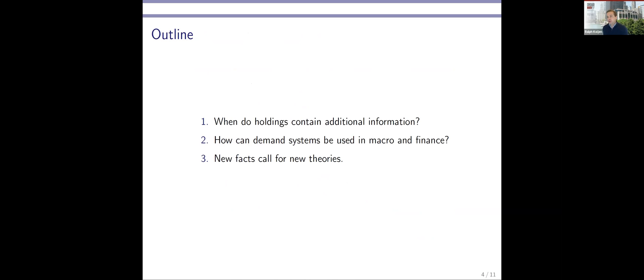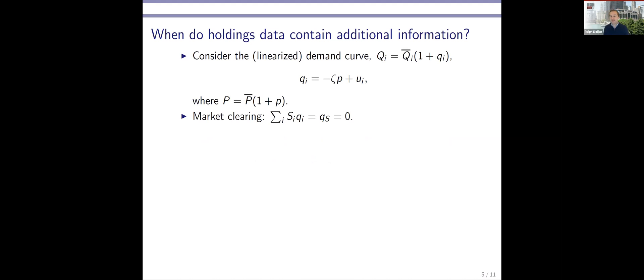What I want to do then is think about under what conditions do we actually learn something from holdings data beyond prices and macro variables and characteristics? And for what kind of questions are demand systems potentially useful? And what kind of lessons can we learn for theory? Let me start with the first question. When do holdings data contain additional information? I'm going to pose a little bit of structure just to make that point. Consider a demand curve of investor I. So QI is my demand for a given stock or the market, whatever you prefer. Think of QI bar as your average demand for a particular stock if you're in steady state. Little QI is the demand deviation. Think of it as rebalancing in response to new information and prices.